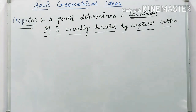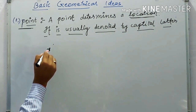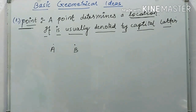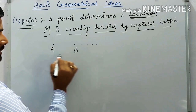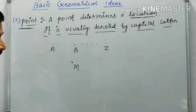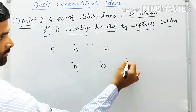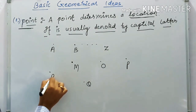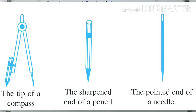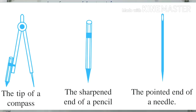For example, this is point A, this is point B, and similarly we use capital letters A, B, C up to Z to name points — such as M, O, P, Q, R. Three real-life examples of a point are: the tip of a compass, the sharp end of a pin, and the pointer of a needle.